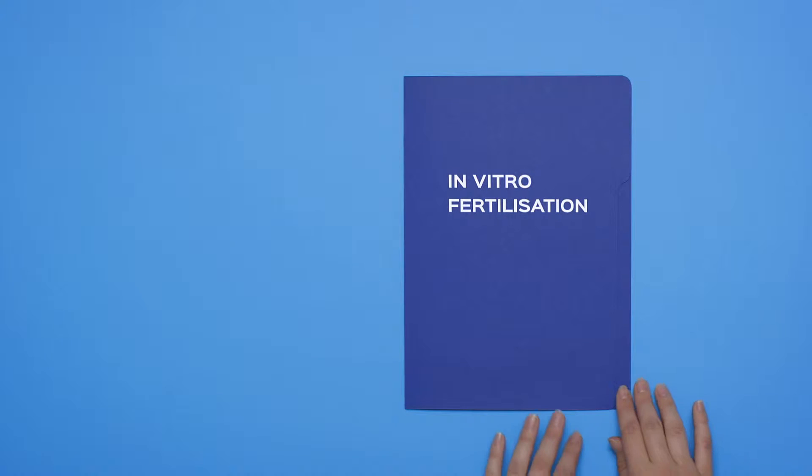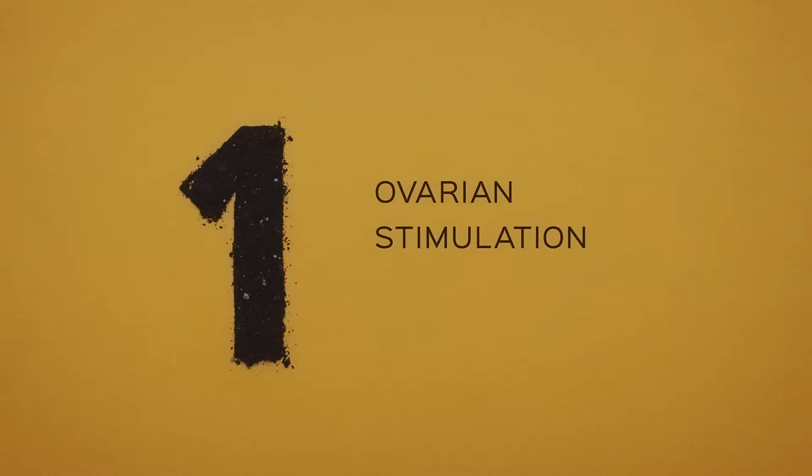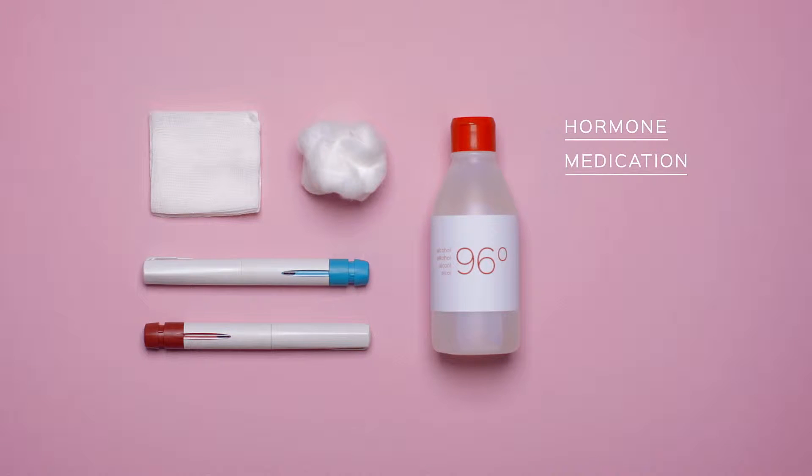In vitro fertilization. The process of in vitro fertilization is divided into different stages. Ovarian stimulation. Hormone medication is administered by means of subcutaneous injections to stimulate the ovaries.